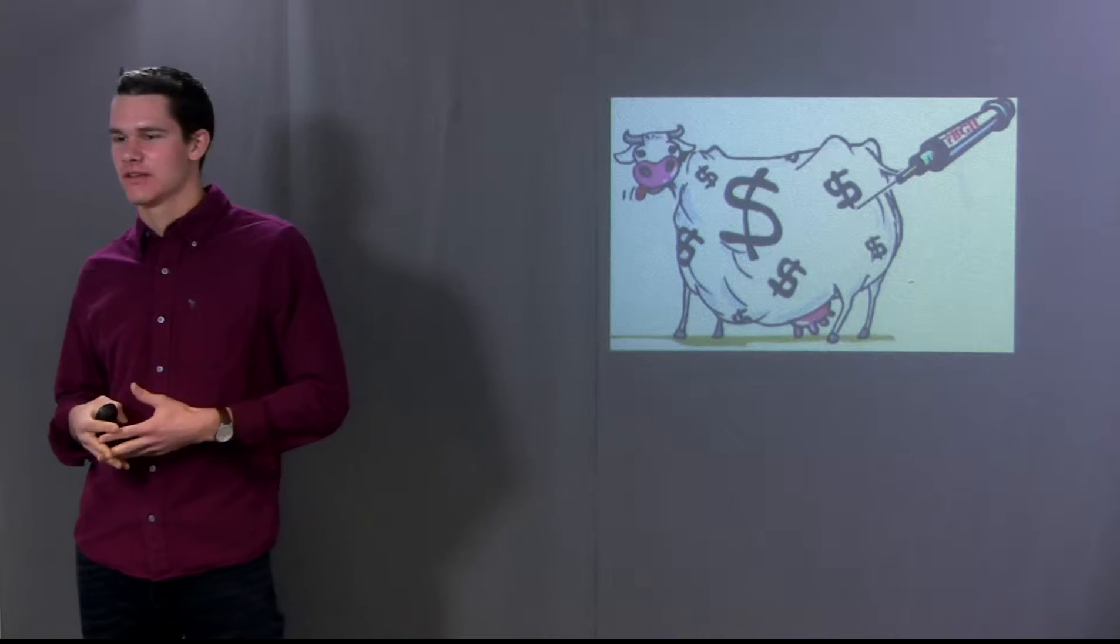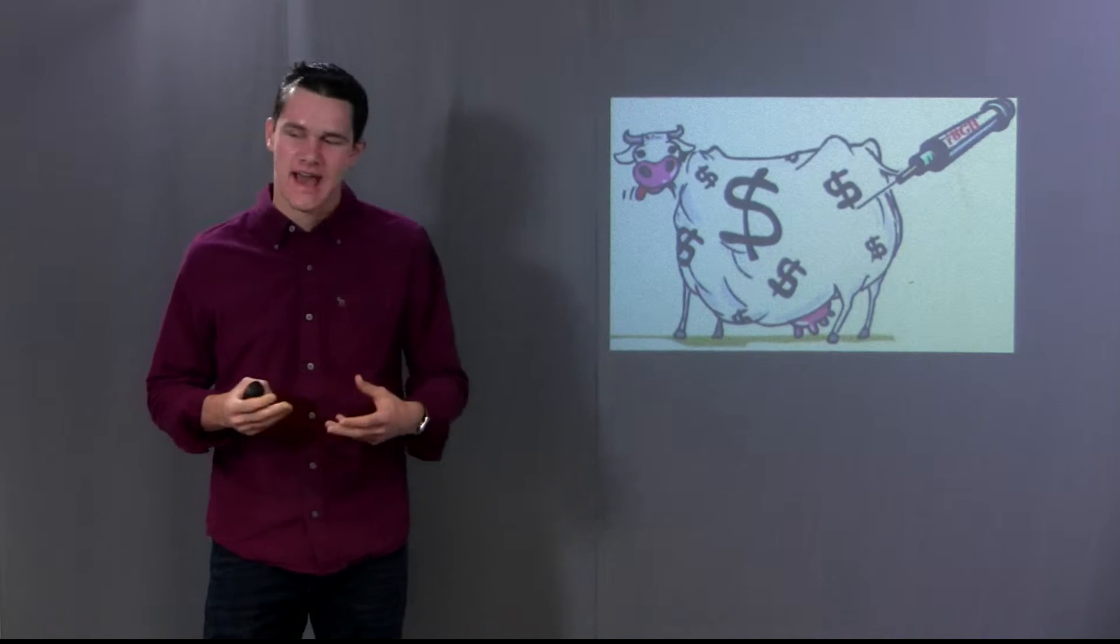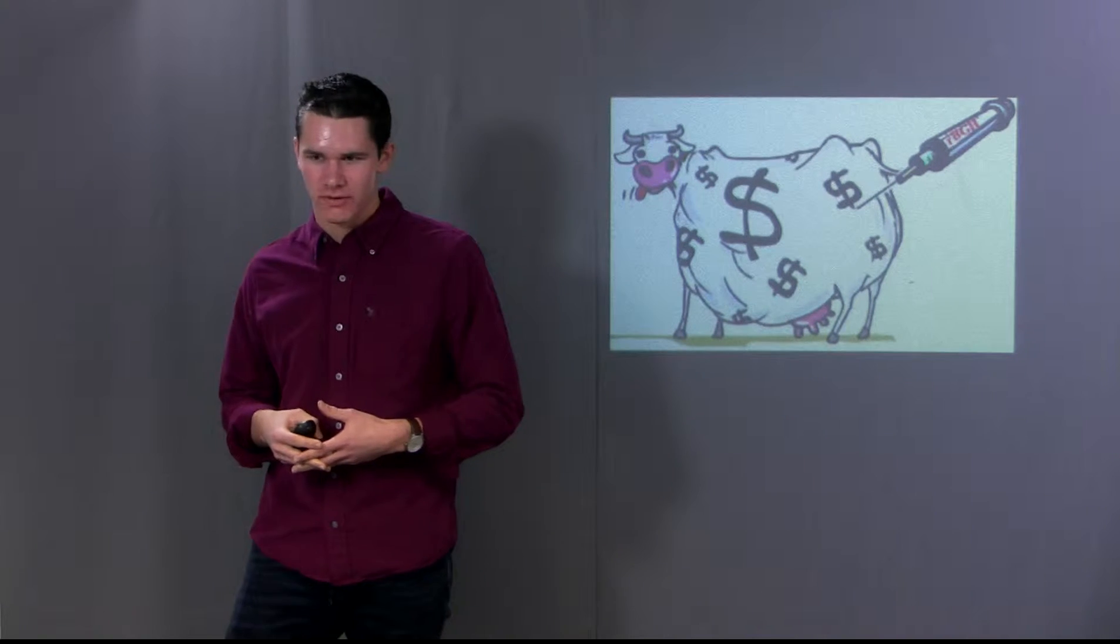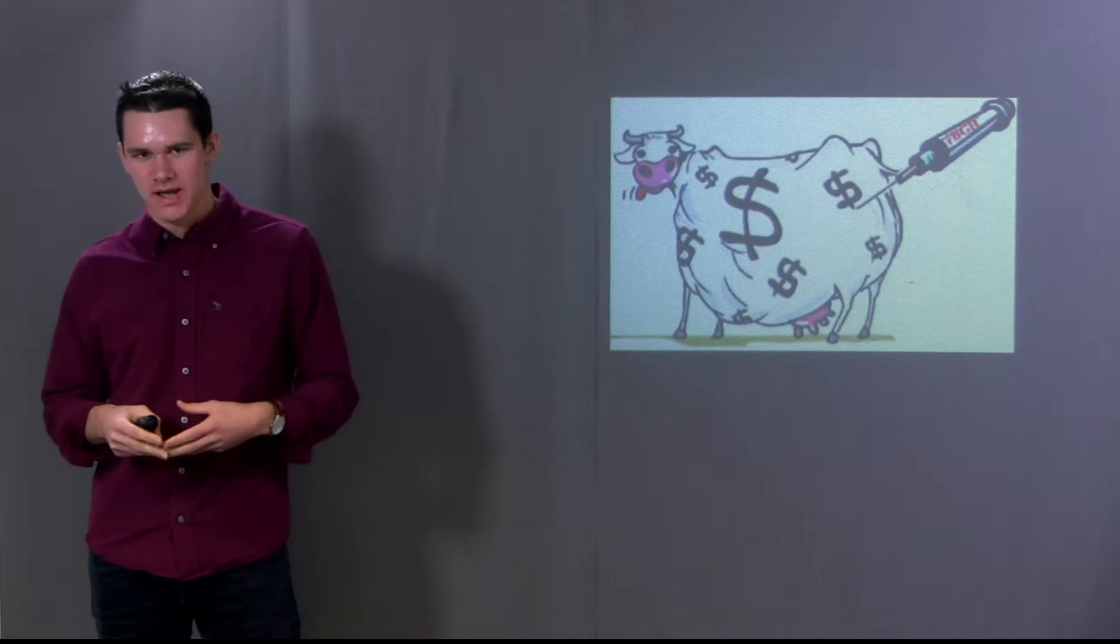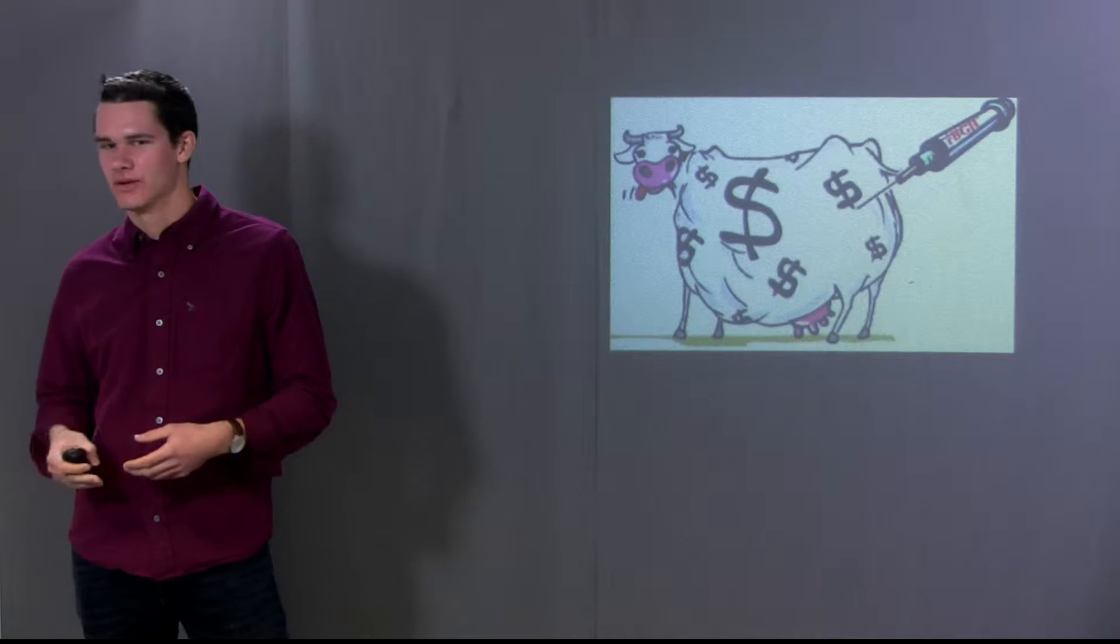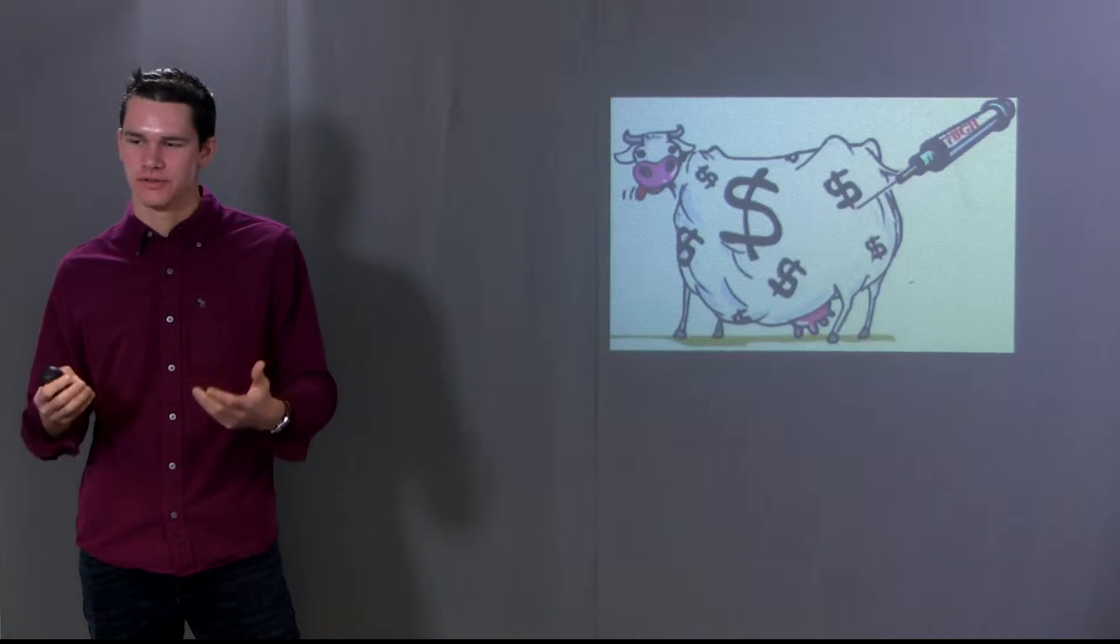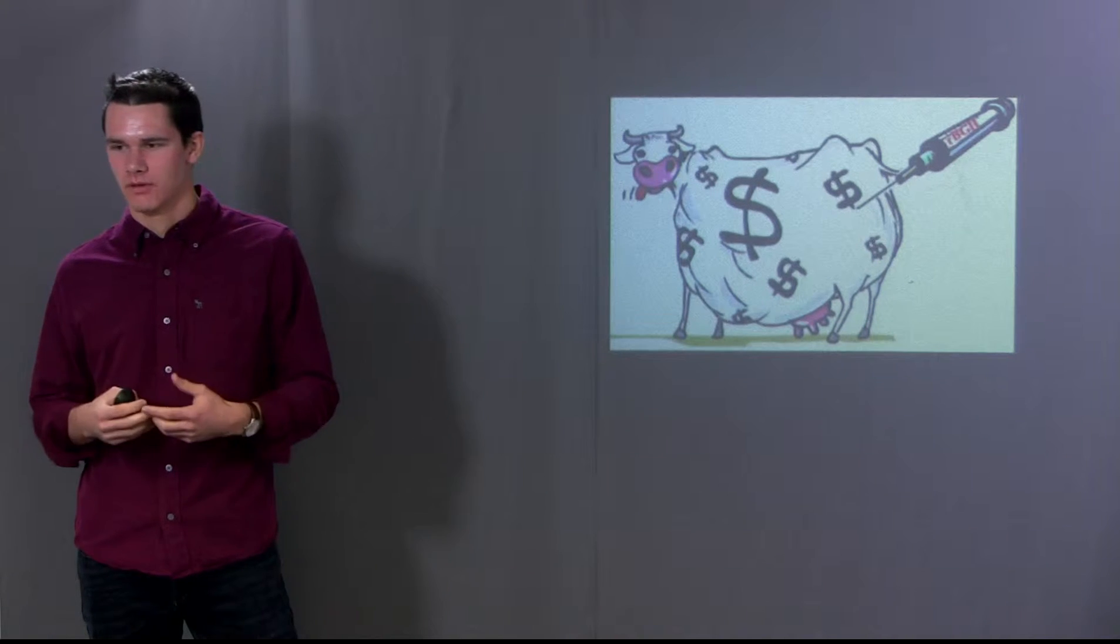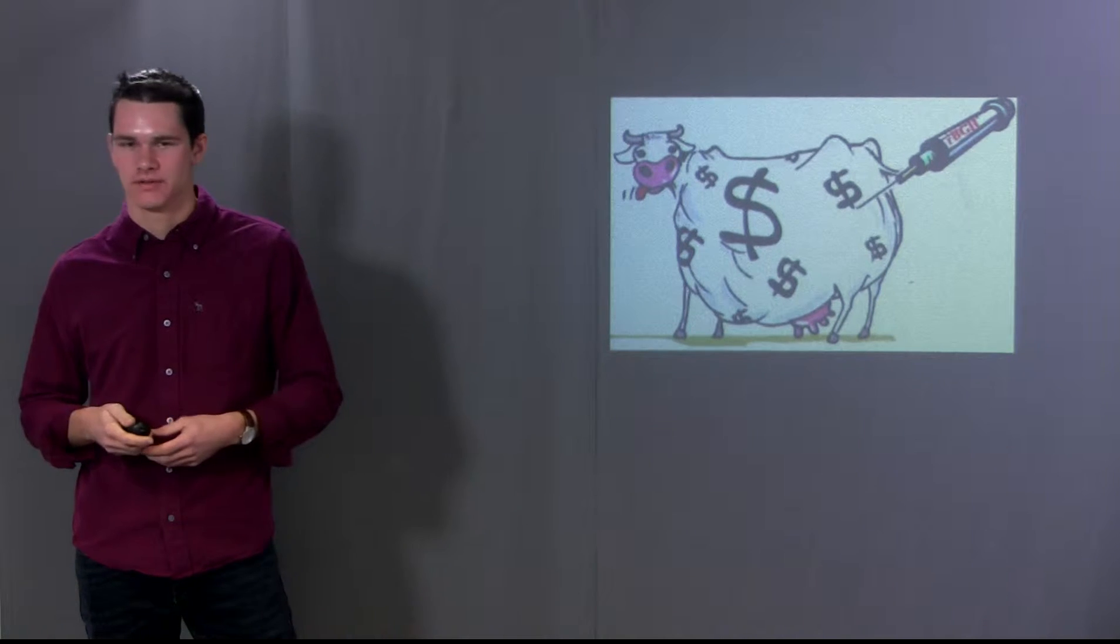Now the first real genetically modified organism was the cow injected with bovine somatotropin in order to increase milk production. Through extensive testing to ensure safety for both the cow and the human, we were able to have this product introduced to the market and widely accepted, although the safety concerns are still present.